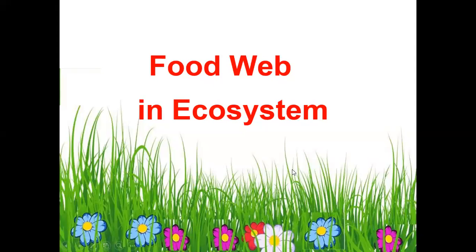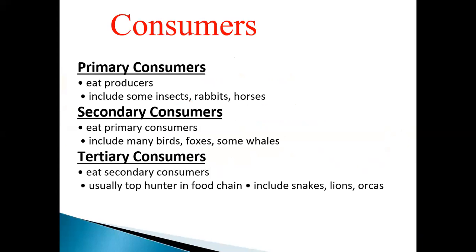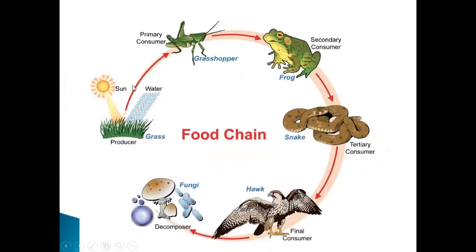Our session today is about the food web ecosystem. Let's remember what are the types of consumers. Consumers could be primary, secondary, or tertiary. The primary consumers eat producers — as you can see here, the primary consumer which is the grasshopper eats grass, the producers. The secondary consumer eats the primary consumer, like the frog here.